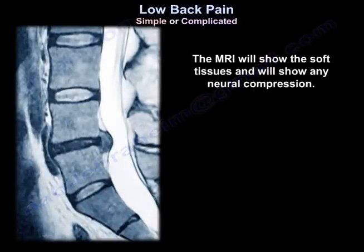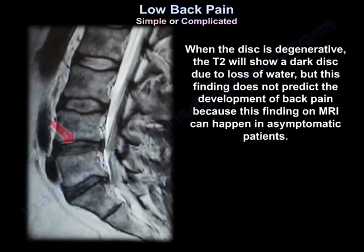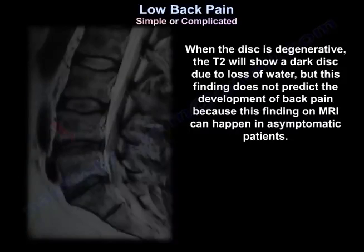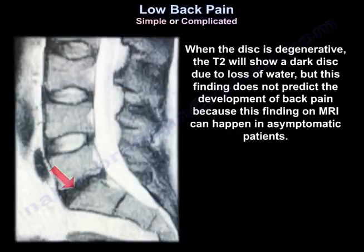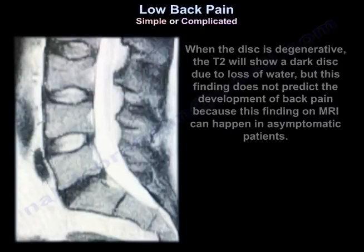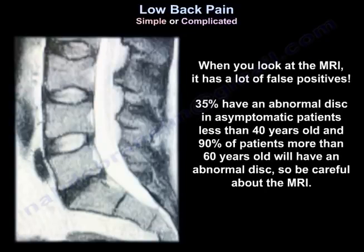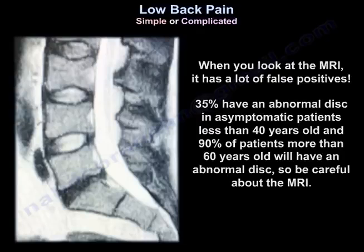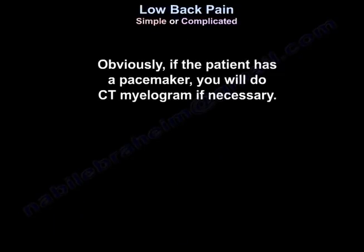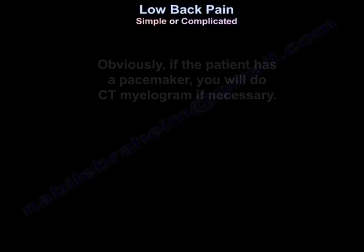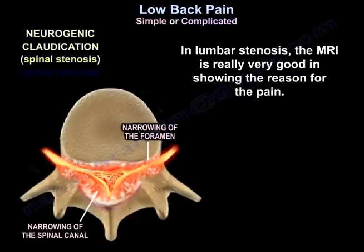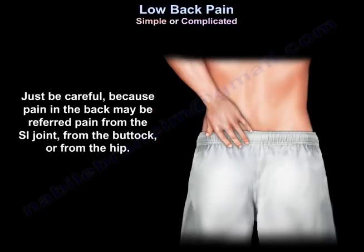MRI shows soft tissues and any neural compression. A degenerative disc will appear dark on T2 due to loss of water, but this does not predict the development of back pain as it can be seen in asymptomatic patients. MRI has many false positives: 35% of asymptomatic patients under 40 have an abnormal disc, and 90% of patients over 60 have an abnormal disc. If the patient has a pacemaker, use CT myelogram. In lumbar stenosis, MRI is very good at showing the cause of pain.